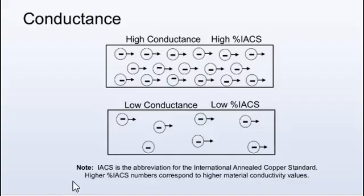This illustration shows that materials with low resistance have high electron flow, and high resistance materials have low electron flow. Low resistance materials like copper will have high IACS percentage values, while high resistance materials like lead will have low IACS percentage values.